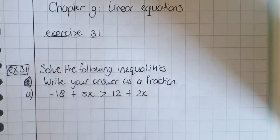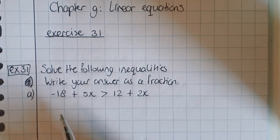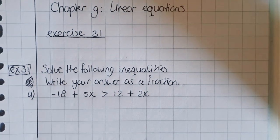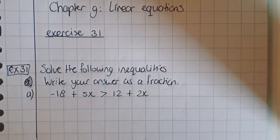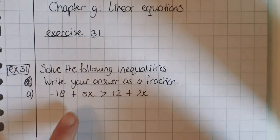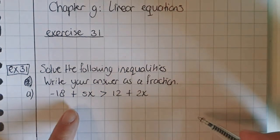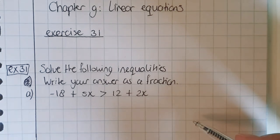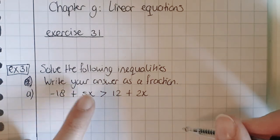Write your answer as a fraction. I'm going to do that. This was the first one: minus 18 plus 5x is greater than 12 plus 2x. I find it important that you also understand the theory behind it, so I'm going to make a drawing first. I'm only going to do it with the first one, and the rest I'm just going to solve by doing the balance method. But this one I'm going to make a picture.